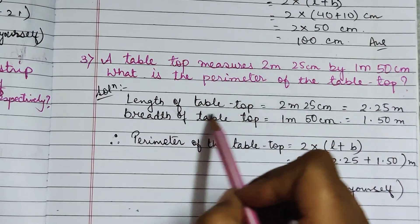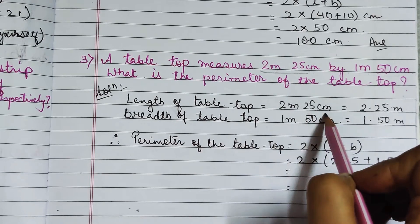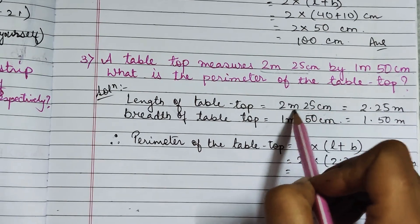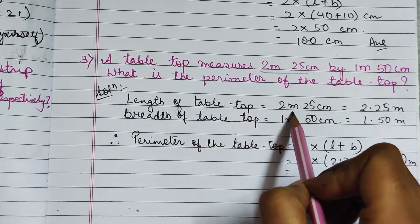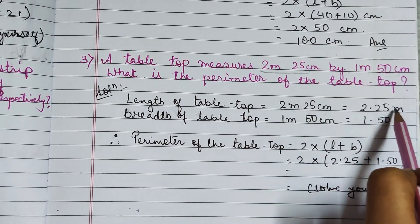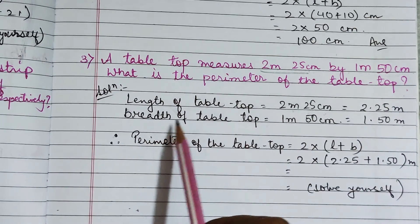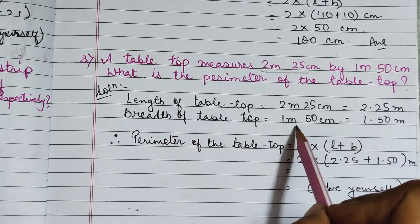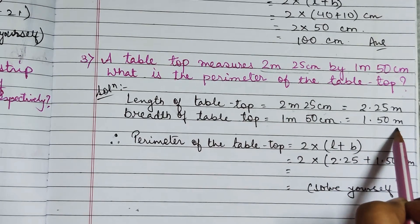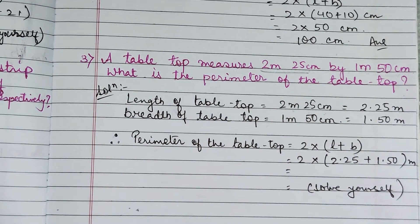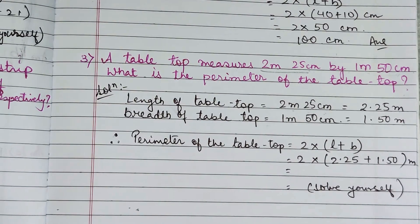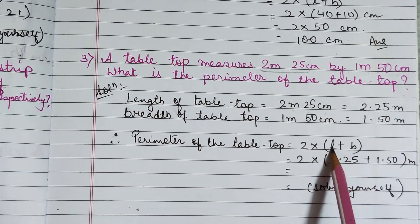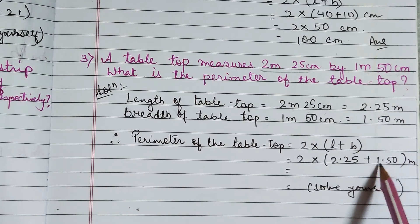Here, length of the table top is equal to 2 meter 25 cm. We are having two units — meter and centimeter — so first we convert it into the higher unit, that is meter. It will be equal to 2.25 meter. Also, breadth of the table top is equal to 1 meter 50 cm, which we convert to 1.50 meter. The table is of rectangular shape, so to find the perimeter of the table top we will use the formula 2 into (length plus breadth), where length is equal to 2.25 and breadth is equal to 1.50.